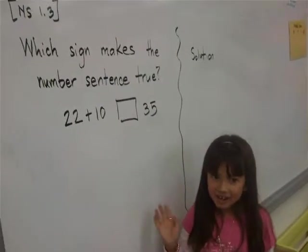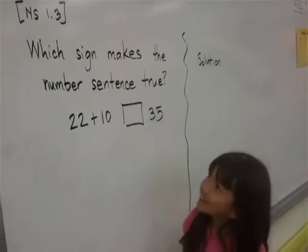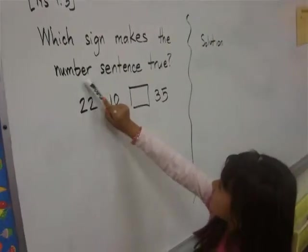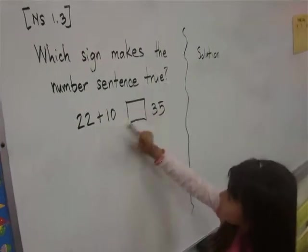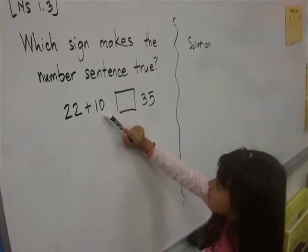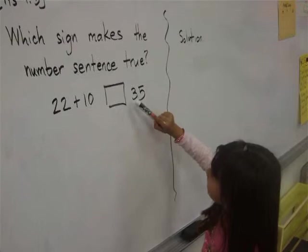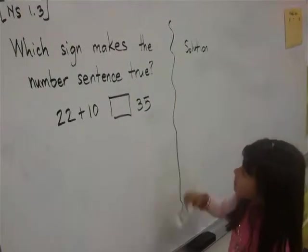Hi, my name is Armani. Which sign makes the number sentence true? 22 plus 10 blank and 35.